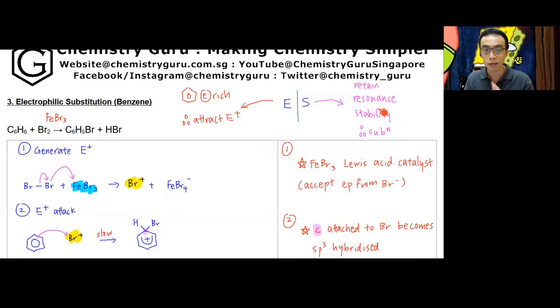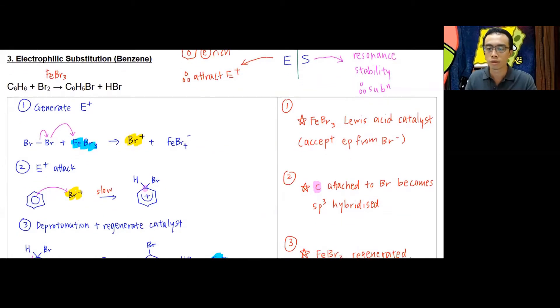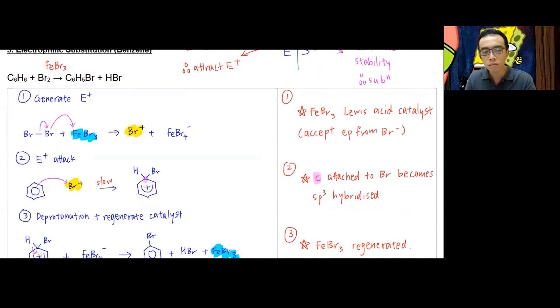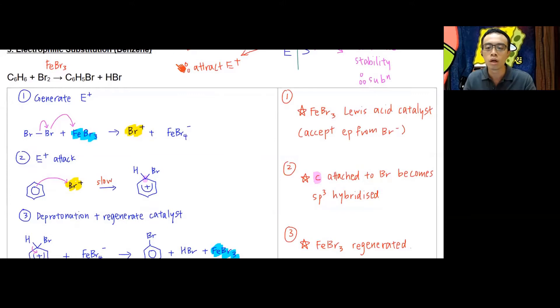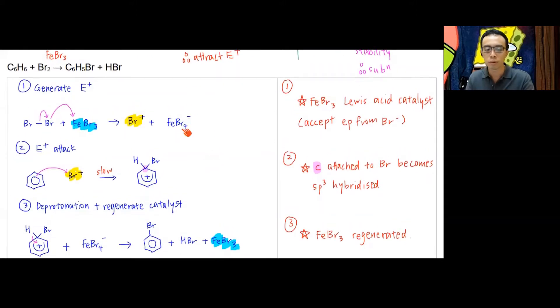It doesn't want that, so it would rather undergo substitution reaction so it can retain this resonance stability. Now involving mechanism wise, we have two to consider: bromination and nitration. Same idea—the mechanism we can put on the left-hand side, the remarks on the right-hand side. Now bromination is pretty simple.